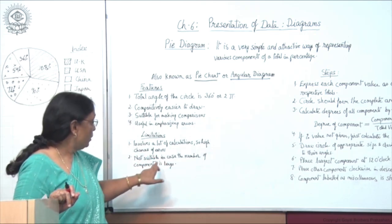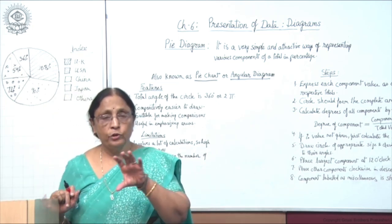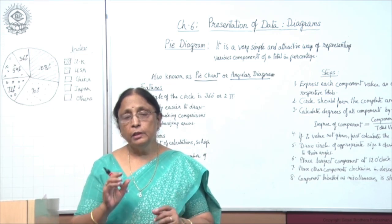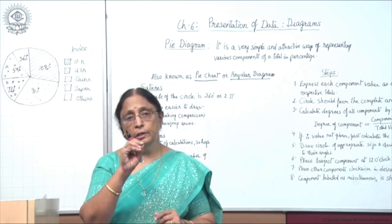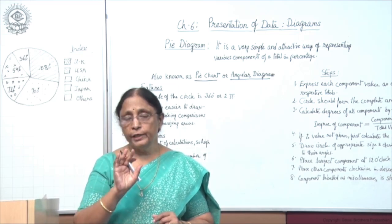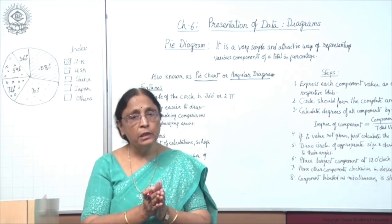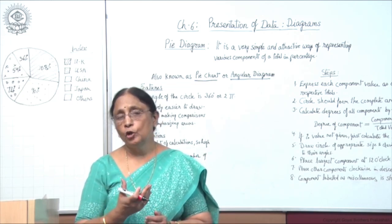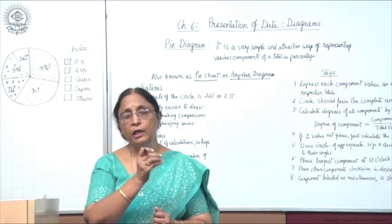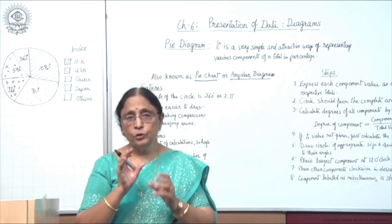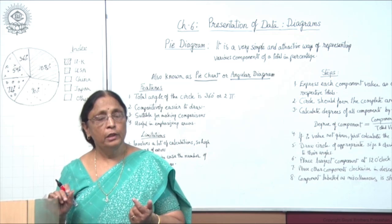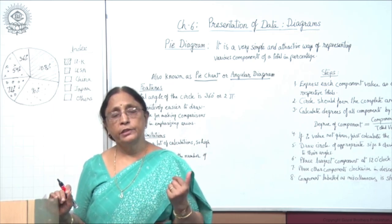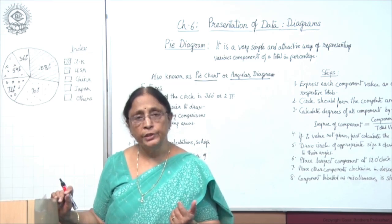Second limitation: it is not suitable when the number of components is large. The circle has 360 degrees, and if there are 20, 30 or 40 sub-parts, the diagram becomes complicated and each small angle is difficult to draw accurately. But if the items are fewer, it is considered a very useful and attractive way to show percentage values.